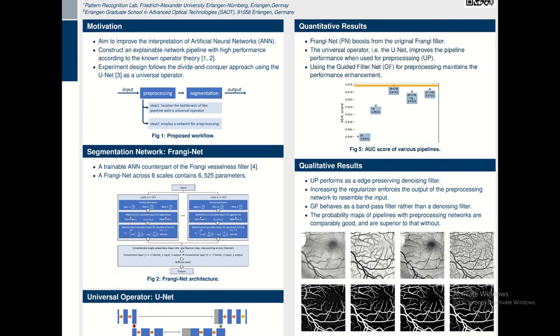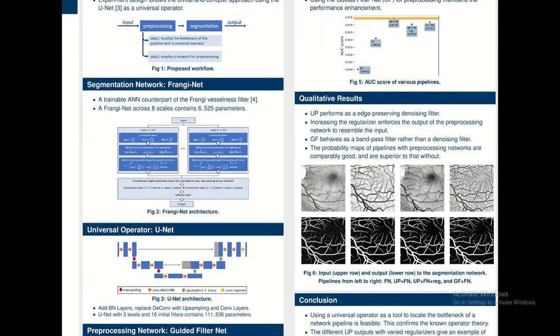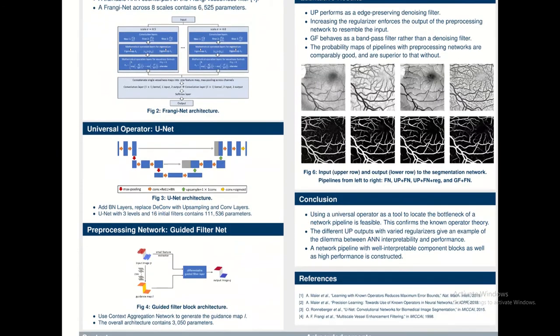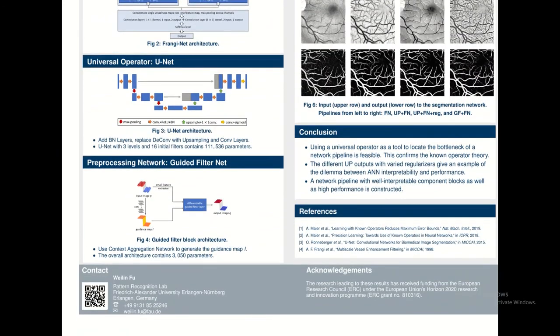It contains 8.5 percent the number of parameters of a three-level U-Net and reaches state-of-the-art performance. In the future, the generalization ability of the network modules could be explored.